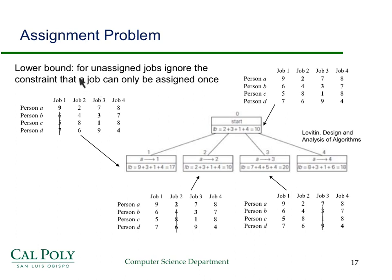For our lower bound, for any unassigned jobs we'll ignore the constraint that a job can only be assigned once. When we start out, no jobs are assigned. So we take the lowest cost for person A, the lowest cost for person B which is 3, lowest for person C which is 1, and lowest for person D which is 4. We've violated the constraint by assigning job 3 to two people, but this will always be lower cost than any valid solution because we always picked the smallest number. It's not a solution, but it's a lower bound. So we start with a lower bound of 10, which is 2 plus 3 plus 1 plus 4.